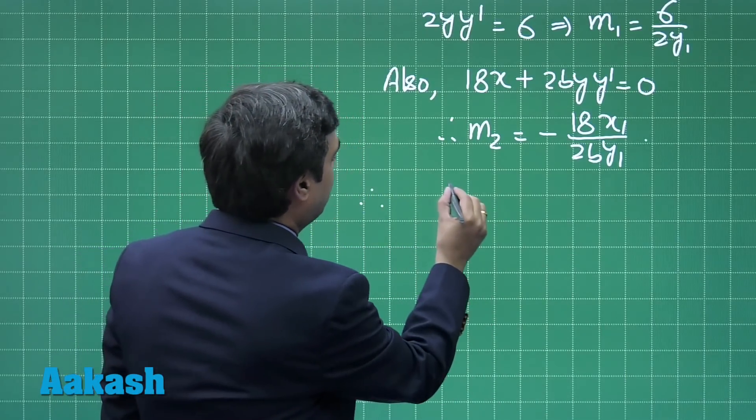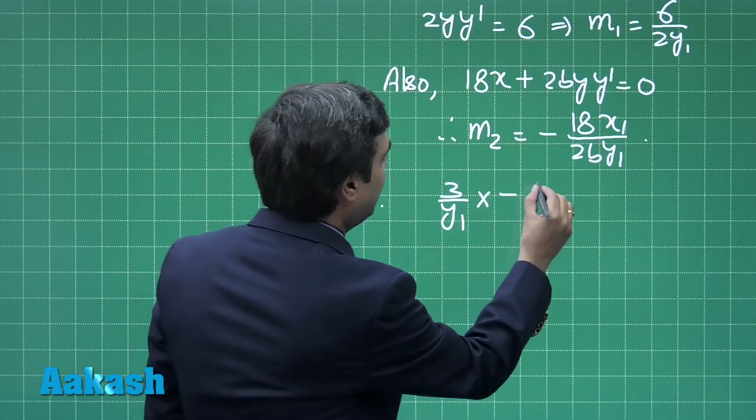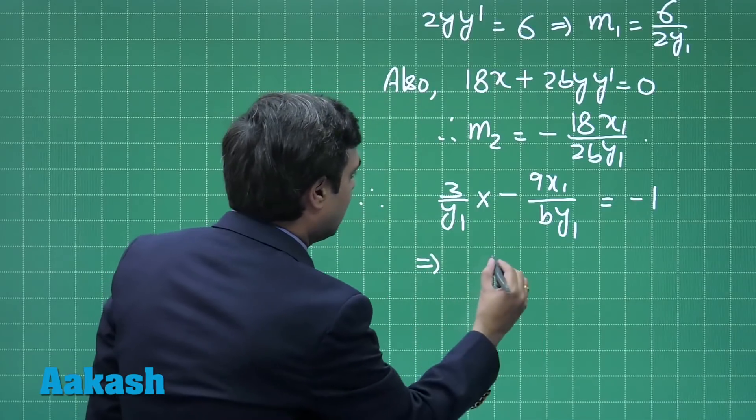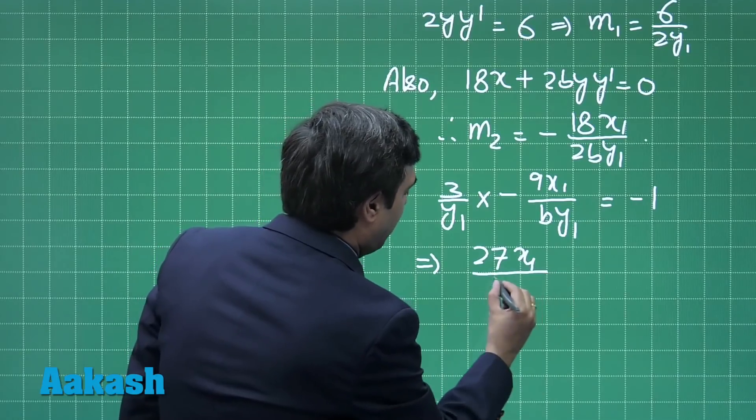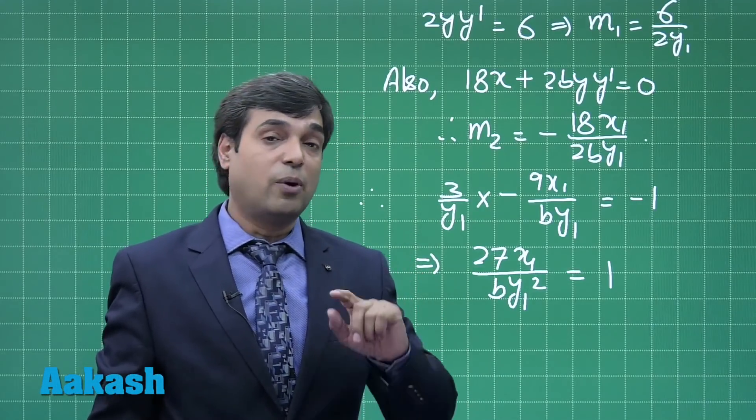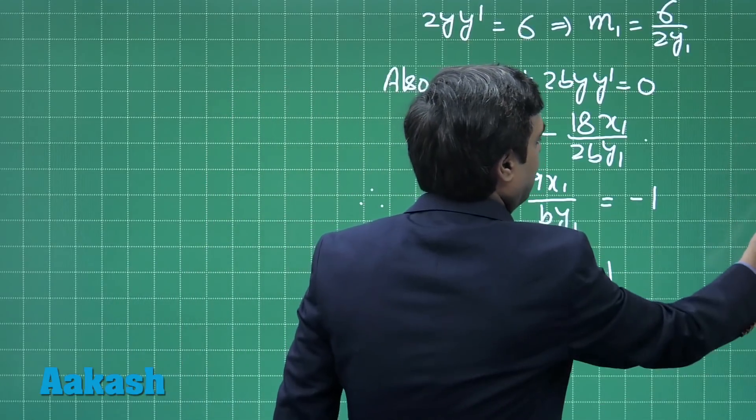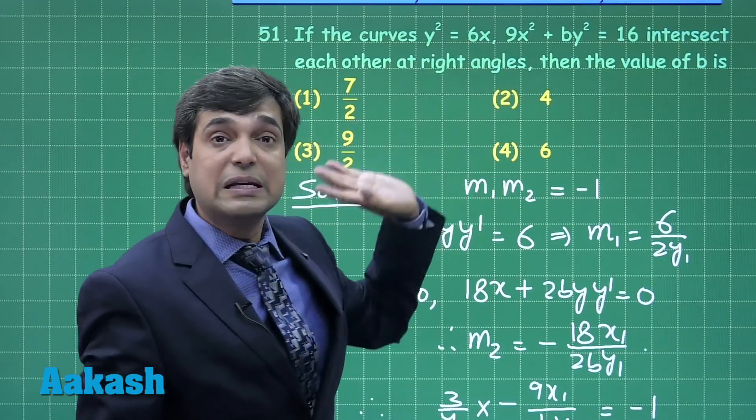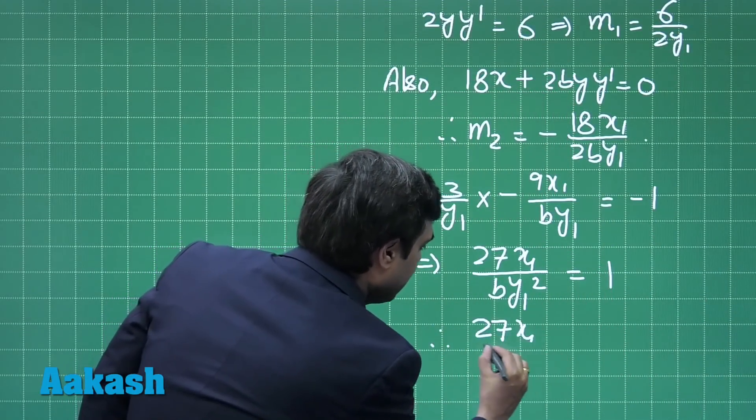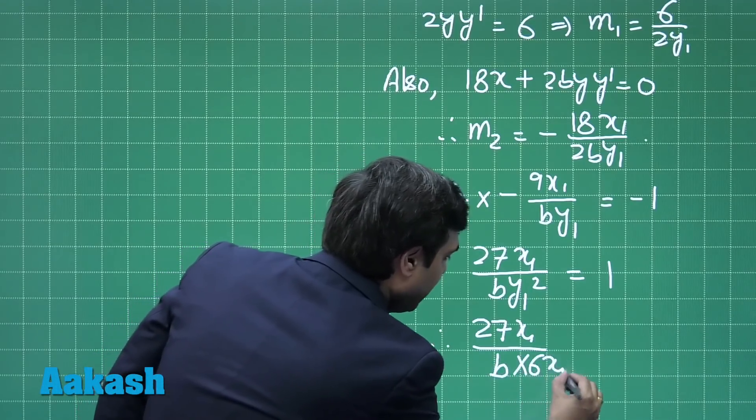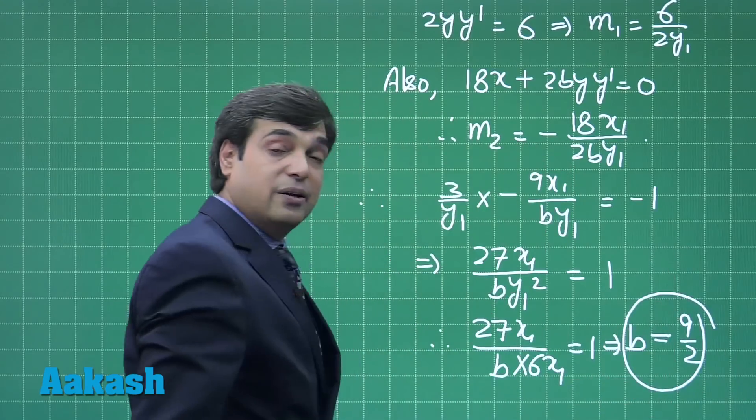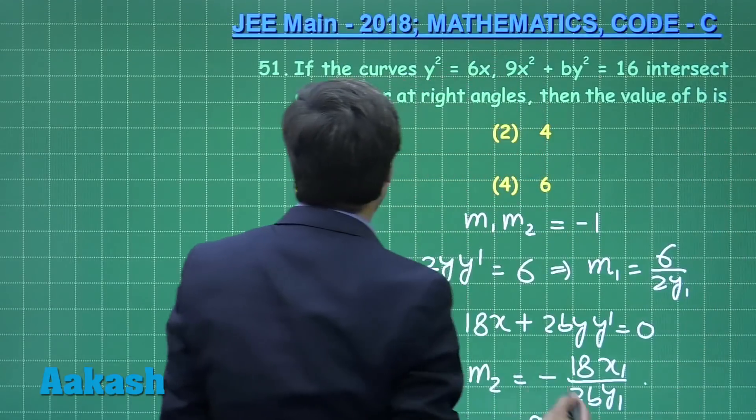m₁m₂ obtained; just multiply the two terms to get m₁m₂ = -1. Therefore, we have (3/y₁) × (-9x₁)/(by₁) = -1. This is 27x₁/(by₁²) = 1. Since (x₁, y₁) lies on both curves, from curve 1 we can see that y₁² = 6x₁. Substituting this value, we obtain 27x₁/(b·6x₁) = 1, or b = 9/2.